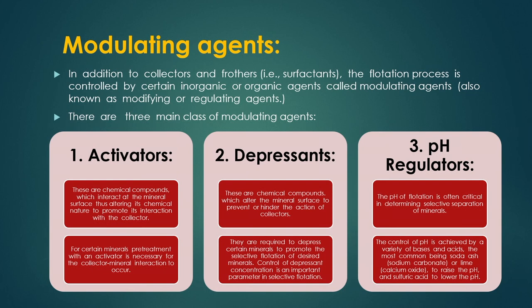Activators are chemical compounds that interact at the mineral surface, altering its chemical nature to promote interaction with the collector. For certain minerals, pre-treatment with an activator is necessary. Depressants are chemical compounds that alter the mineral surface to prevent or hinder the action of collectors; they are required to depress certain minerals to promote selective flotation of desired minerals. Control of depressant concentration is an important parameter in selective flotation.